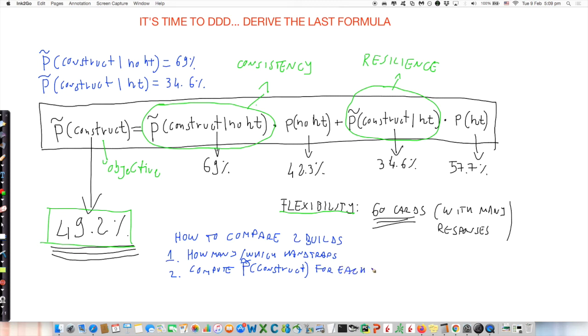Meaning you need to do what we have done in the previous video: counting the outs, converting outs into probability, and then getting this number with the hypergeometric calculator. And number three: you pick the build with the larger value of P construct.